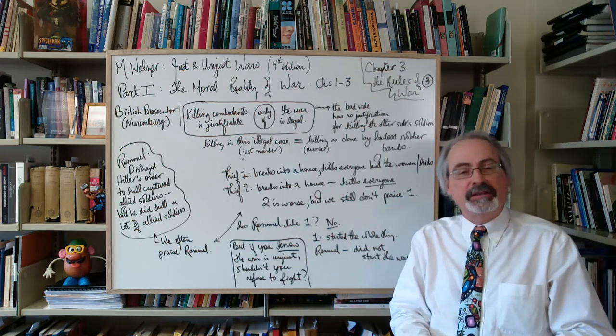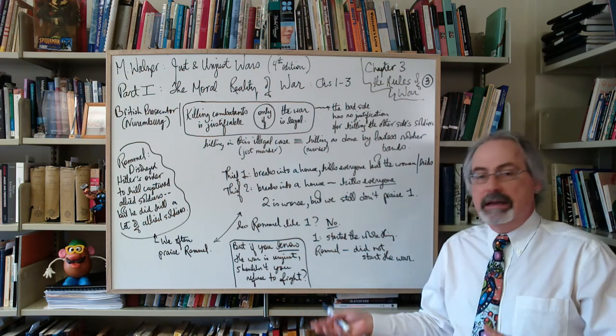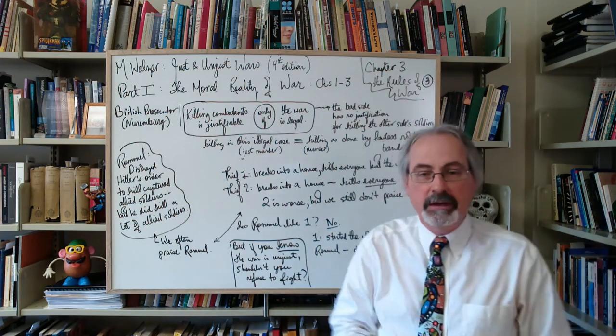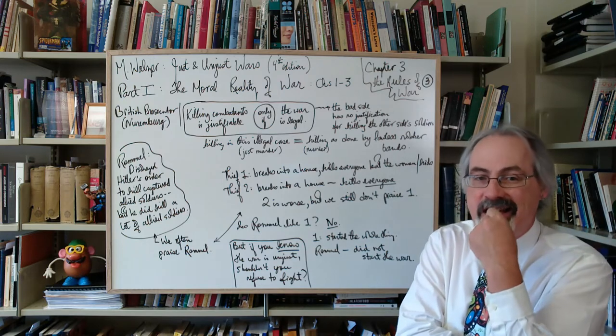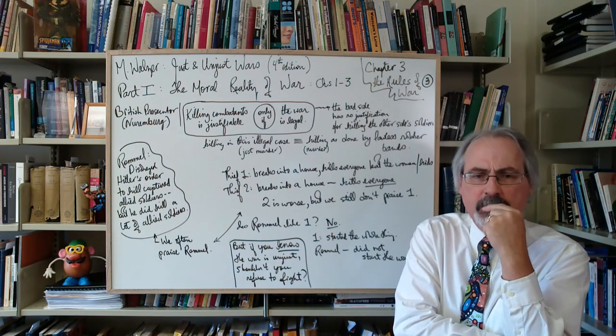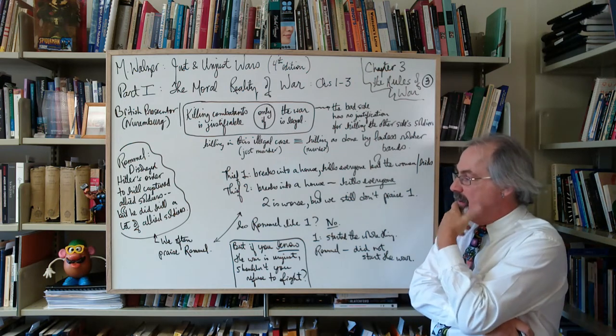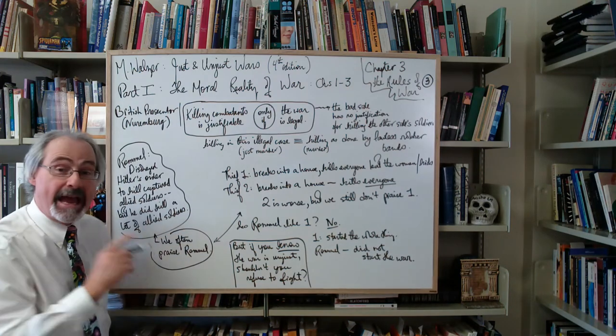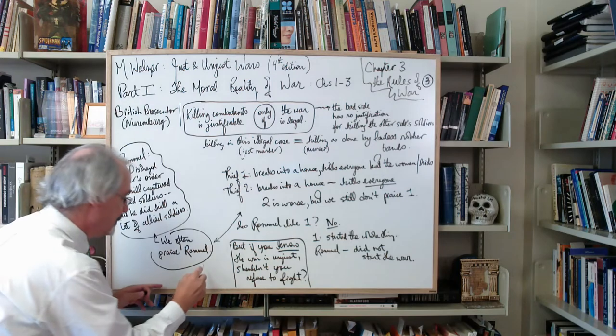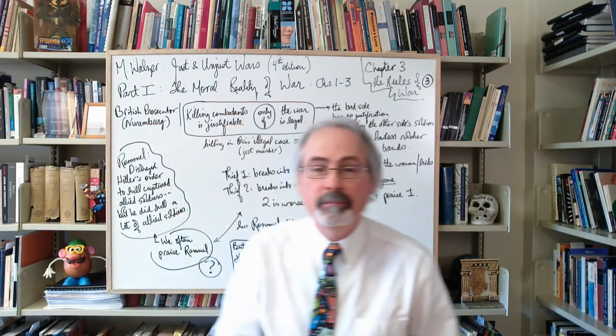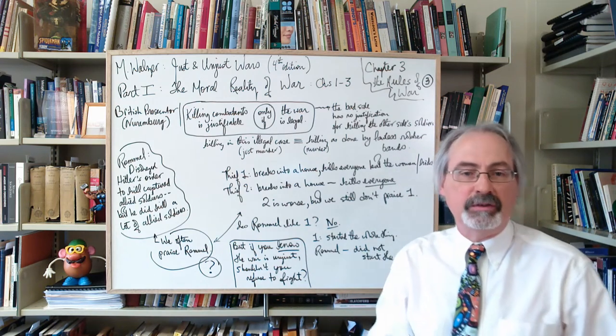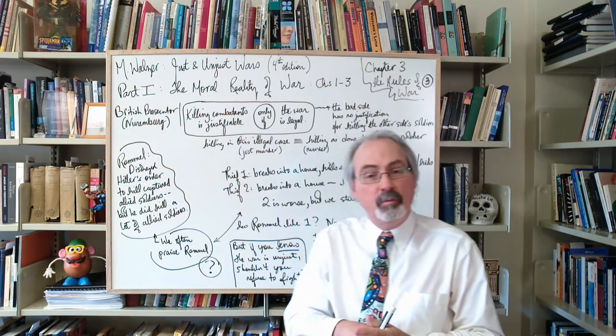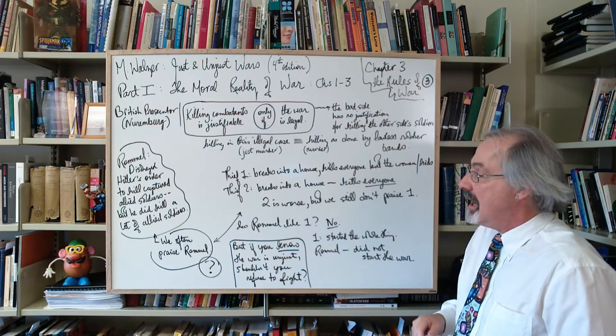Now what I really want to bring up is not to say that Walzer's got a knockdown argument or other people have against him, but it does show one thing that's very important when you read this kind of stuff: what's your fundamental intuition? We could say, maybe we have in the past praised Rommel, but should we? Maybe we should be rethinking how we think about these issues. Maybe it's the case that Rommel may not be exactly like this, but...